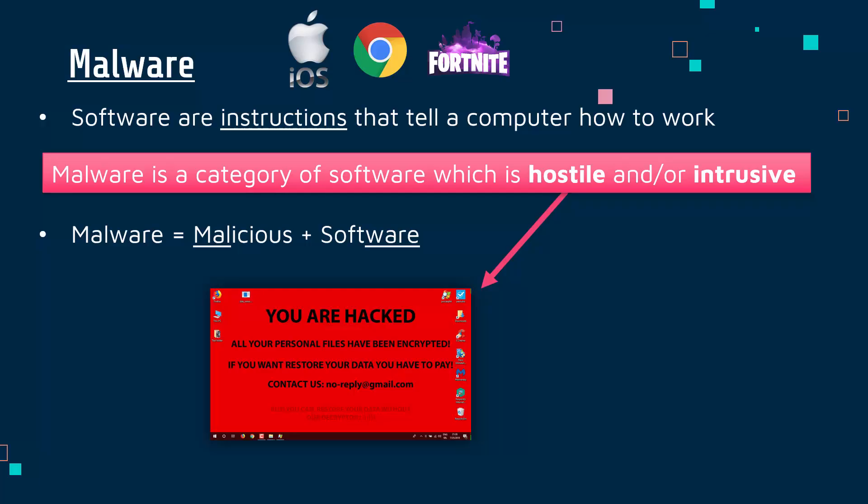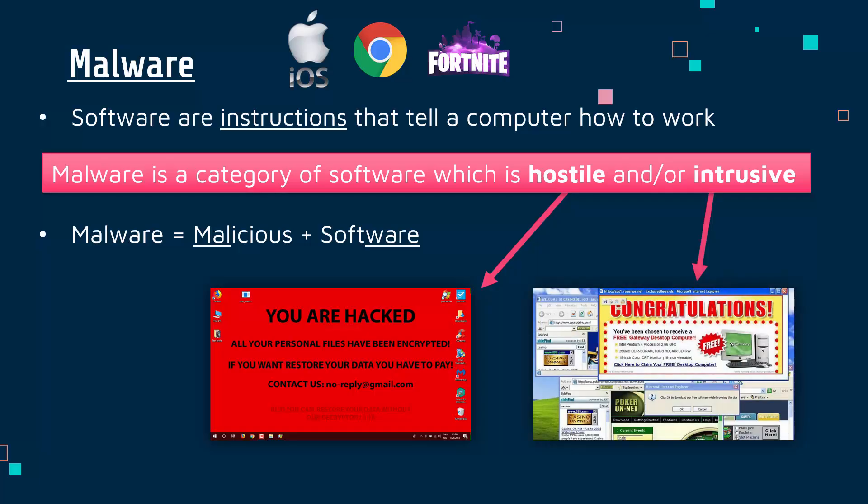Here is an example of some ransomware, which we'll look at in the next video, where it locks your files and tries to get money out of you in order to unlock your files - so it's very hostile, trying to cause you trouble. It can also be intrusive, and intrusive can often be a little bit less extreme than being hostile. Intrusive is about invading your privacy and maybe stopping you doing certain things. This is an example of adware, where loads of adverts get generated, loads of pop-ups - it's less hostile, just a bit annoying and intrusive. But most malware is both hostile and intrusive.